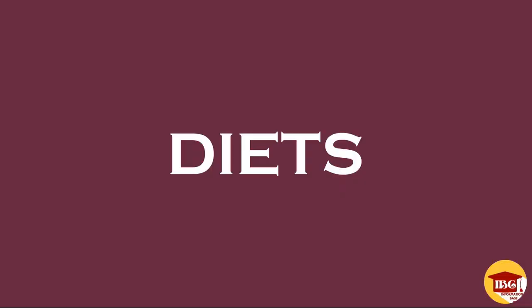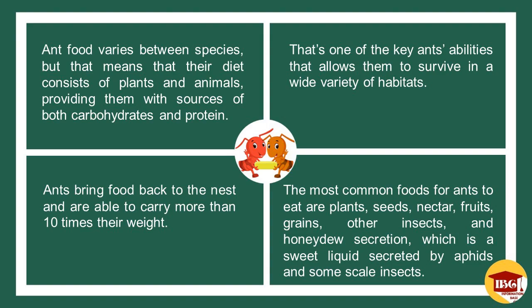Ants practice omnivorous types of diets in their life. Ant food varies between species, but their diet consists of plants and animals, providing them with sources of both carbohydrates and protein. That is one of the key ant abilities that allows them to survive in a wide variety of habitats. Ants bring food back to the nest and are able to carry more than ten times their weight.